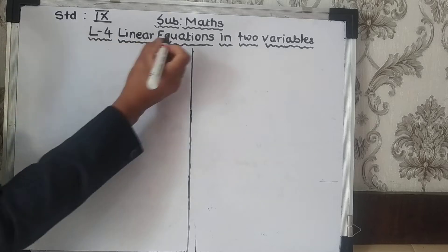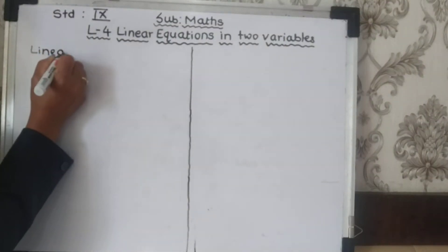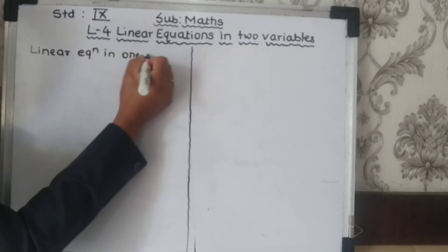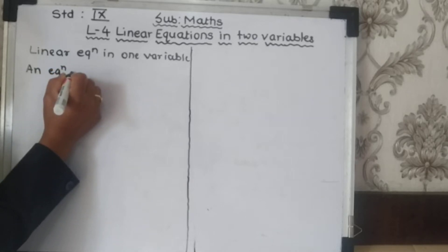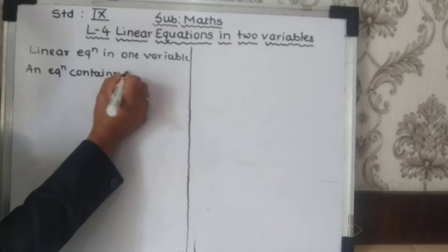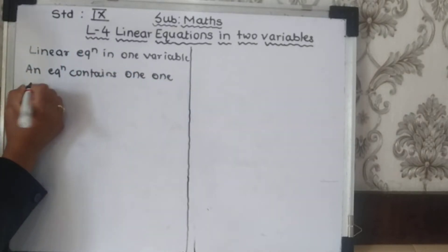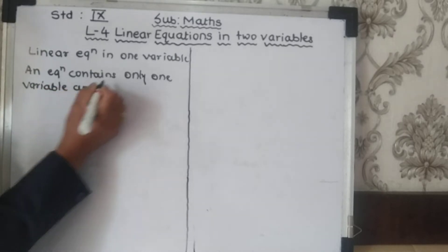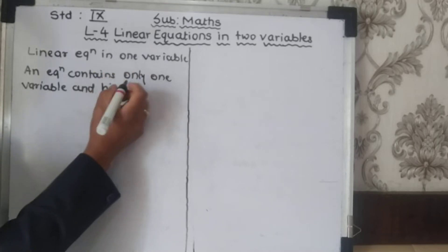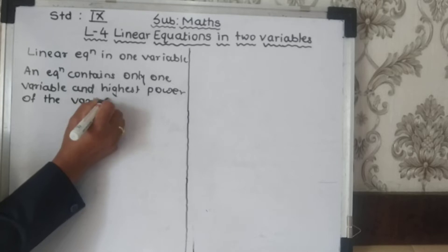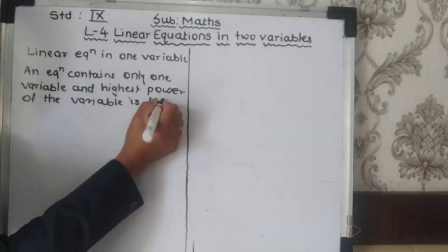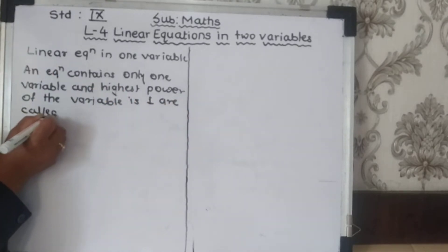In our earlier class we studied linear equations in 1 variable. An equation which contains only one variable, and the highest power of that variable is 1, is called a linear equation.